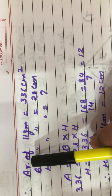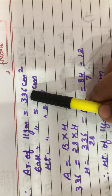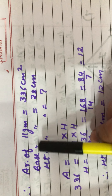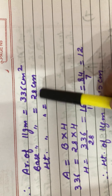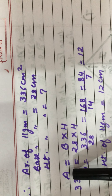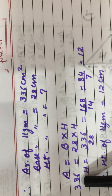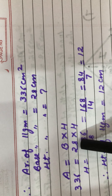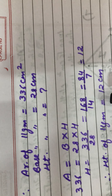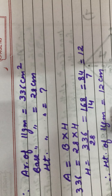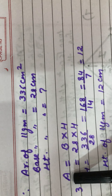Since the area of the triangle and area of the parallelogram are equal, the area of the parallelogram is also 336 cm². The base of the parallelogram is given as 28 cm and we have to find the height. We know area of parallelogram = base × height. Putting values: 336 = 28 × height. So height = 12 cm. This is how we find the height of the parallelogram.